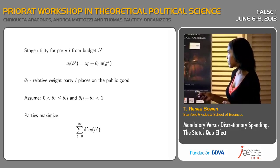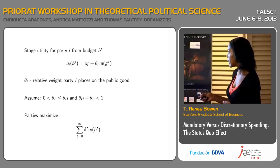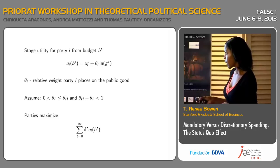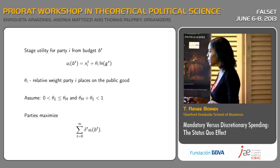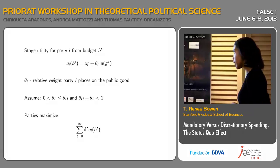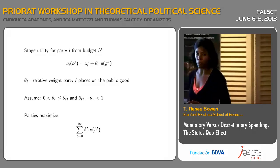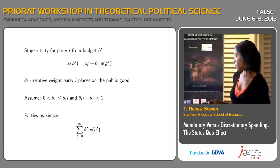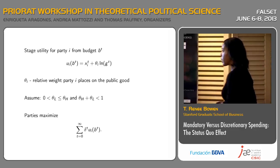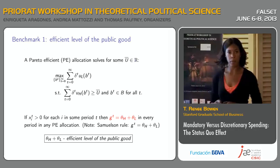Each party receives a utility in period T for their transfer XIT, plus theta-I — the weight they place on the public good — multiplied by log GT. Theta-I is the relative weight party I places on the public good, and we assume that theta-L is less than theta-H, and the two together sum to something less than one, which gives us that the efficient level of the public good can always be provided.